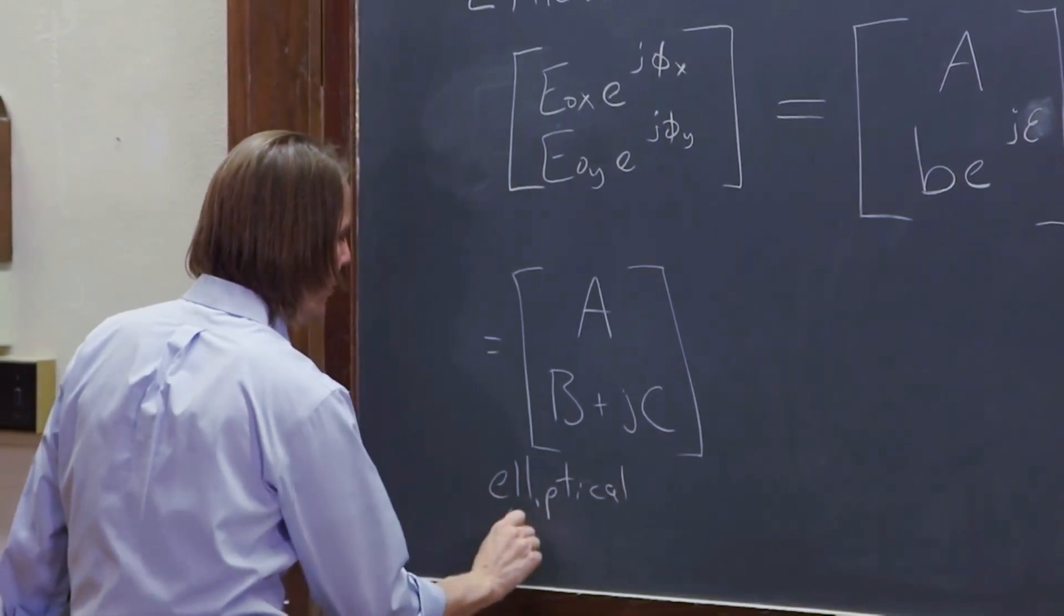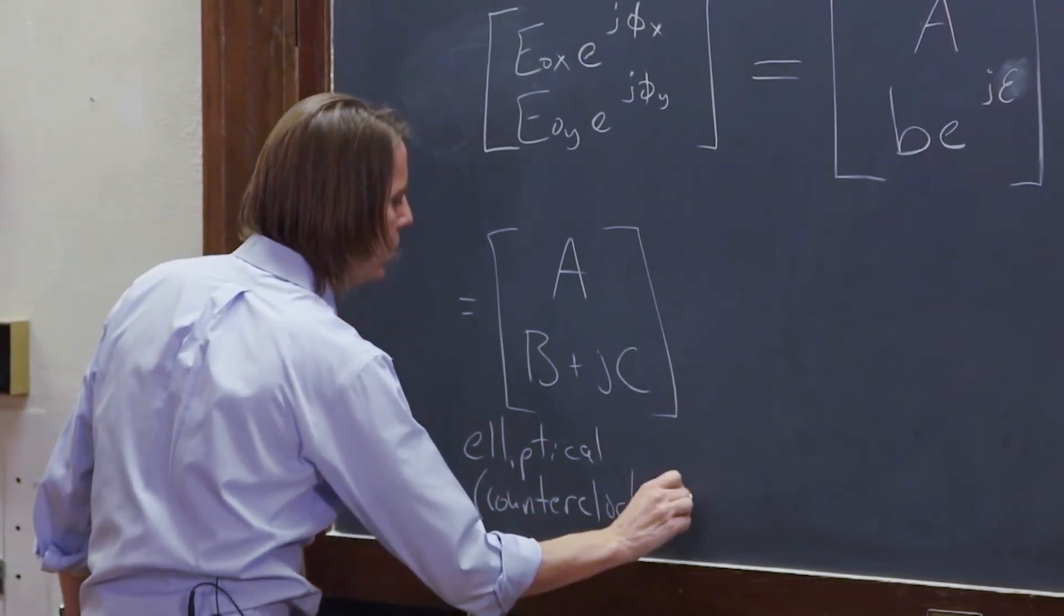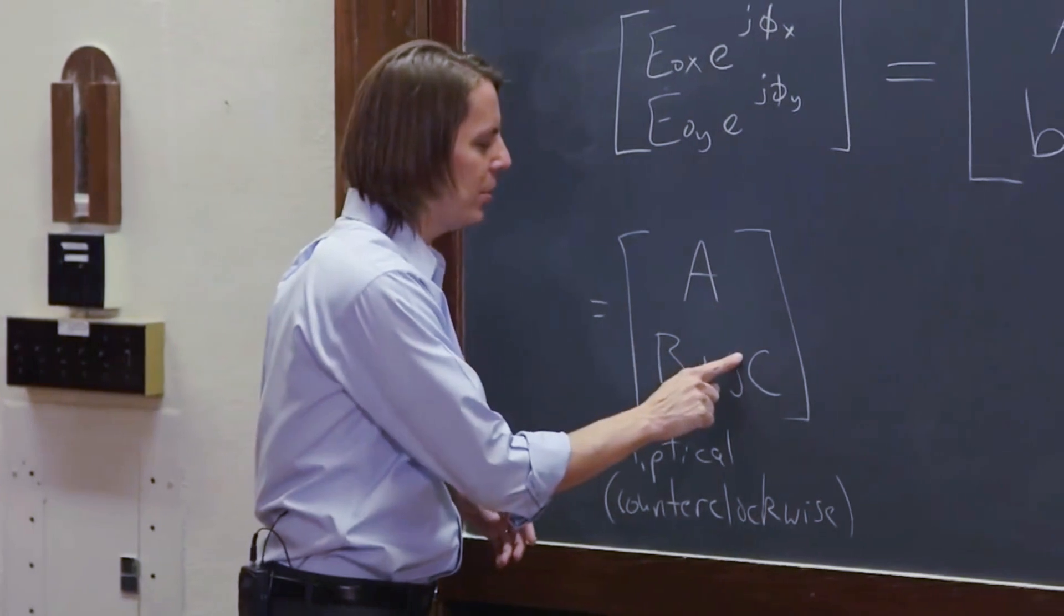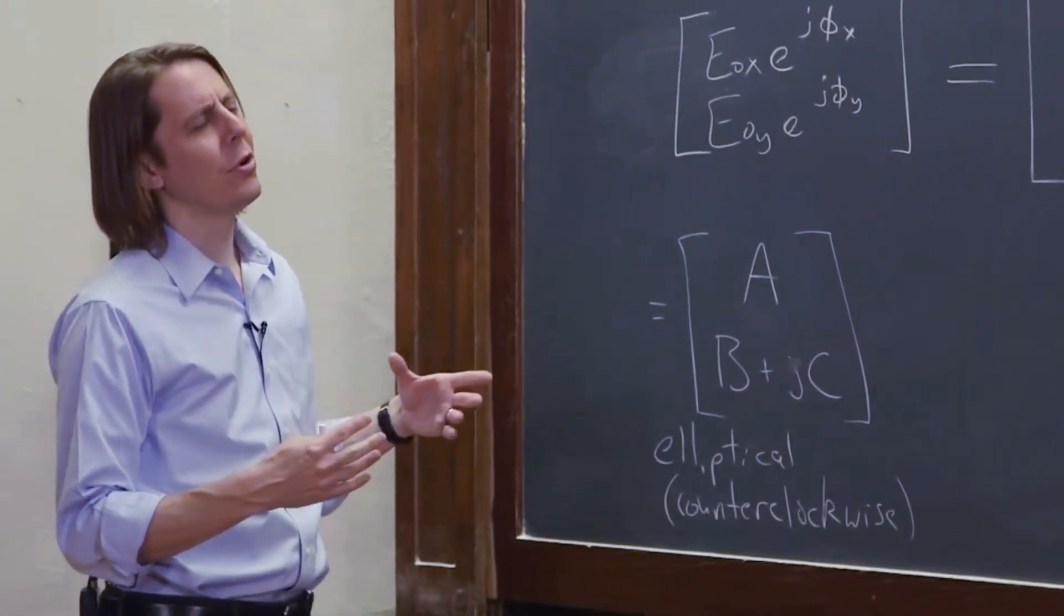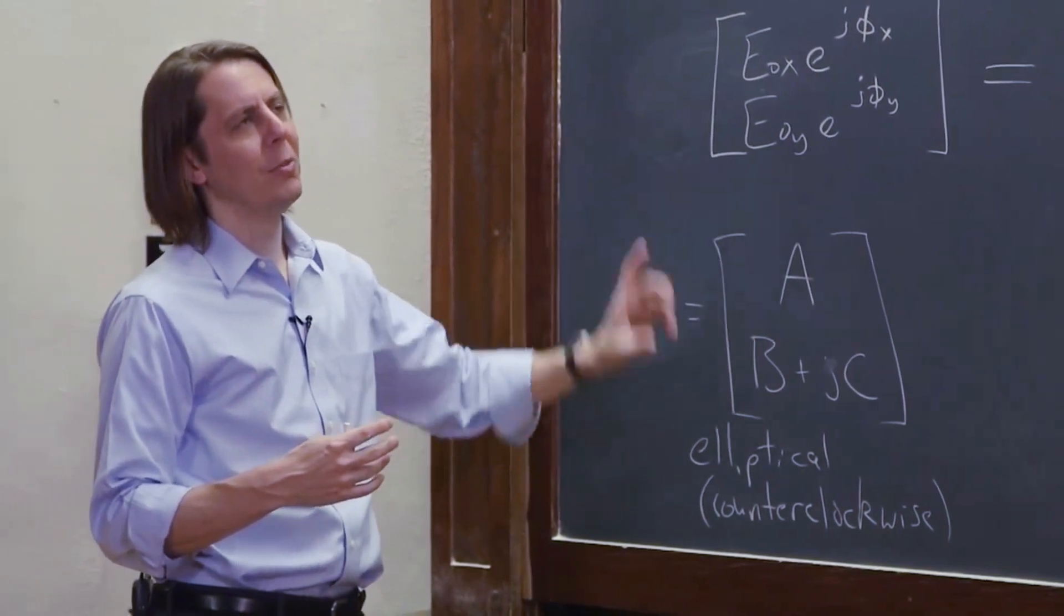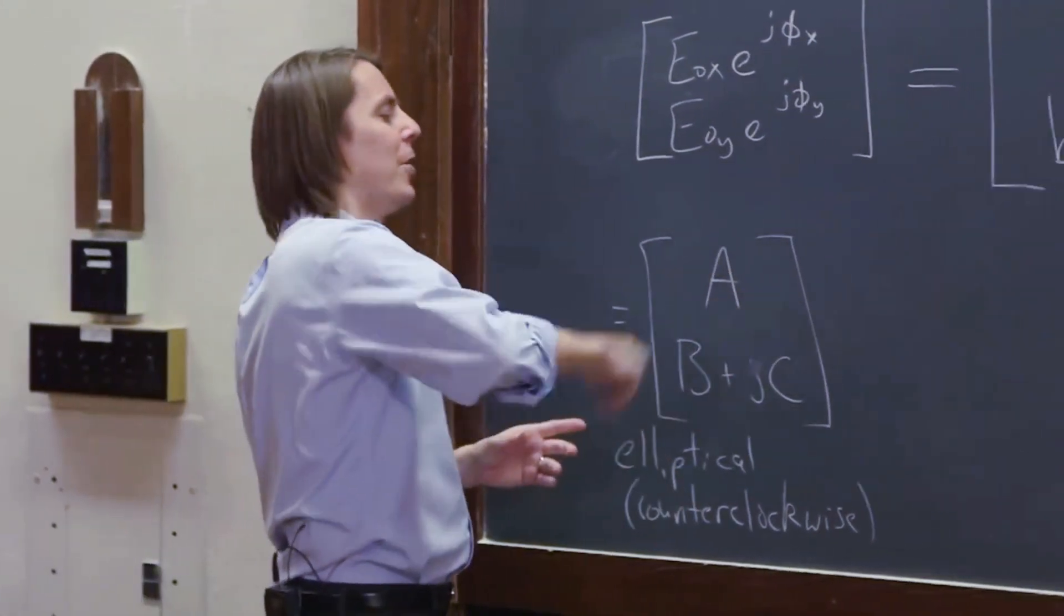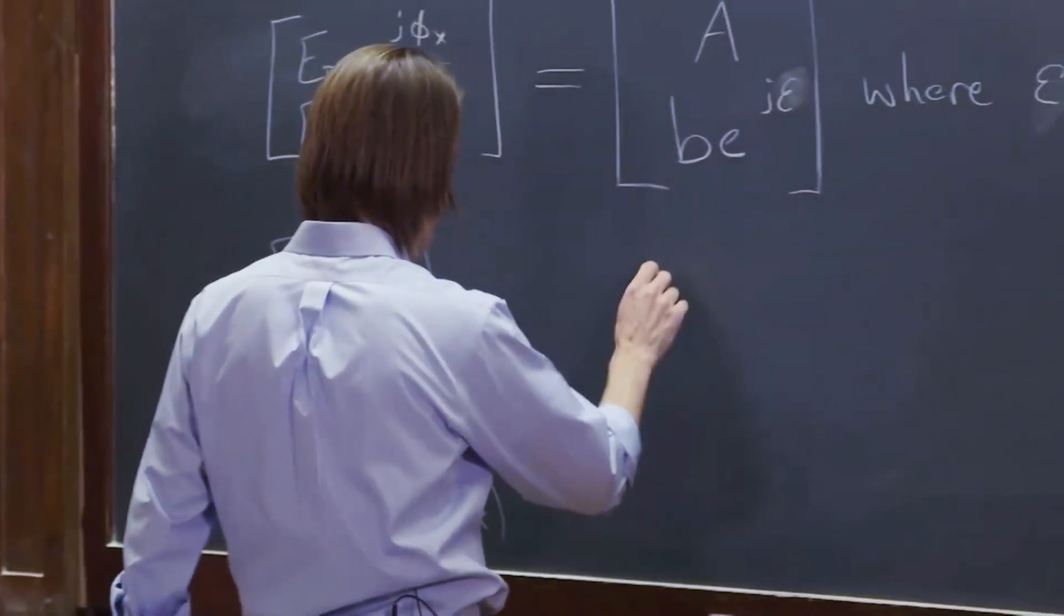And it is by the way going to rotate counterclockwise. And that's not intuitively obvious, but you can tell that because the complex part is positive. So if you think back to the circular forms of light when it was a positive J in the bottom it went LCP. So now it's going to go counter kind of like LCP just in a weird pattern. A weird pattern that looks something like this.